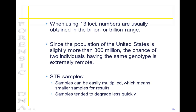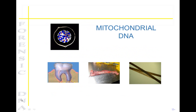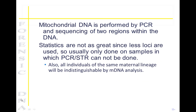STR samples can be easily multiplied because it takes such a smaller sample, and they also tend to degrade less quickly because of this size. Mitochondrial DNA analysis may be necessary for some samples. Mitochondrial DNA is also performed by PCR, and the sequencing is done for two regions within the DNA. Because of this, the statistics are not as great as with PCR-STR, which can be done on nuclear DNA.